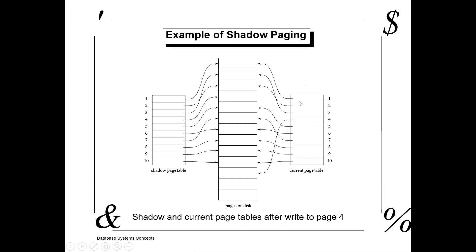For example, if the transaction fails in between, we can copy the contents of the shadow page table to the disk. And we can retrieve the information again into the current page table.